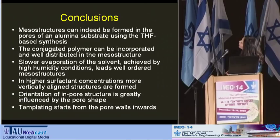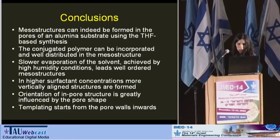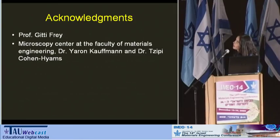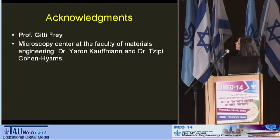To conclude: mesostructures can indeed be formed in the pores of an alumina substrate using the THF-based synthesis. The conjugated polymer can be incorporated and well-distributed inside the mesostructure. A slower evaporation of the solvent achieved by high humidity conditions leads to well-ordered mesostructures. At higher surfactant concentration, more vertically aligned structures are formed, and the orientation of the pore structure is greatly influenced by the pore shape. An additional conclusion I had no time to show today is that templating of the mesostructure starts from the pore walls and moves inwards towards the center of the pores. I would like to thank my supervisor Professor Gitti Frey, and also Dr. Jaron Kaufmann for the EFTEM, and Dr. Zipi Koenheim for the FIB sample preparation, both from the Technion Microscopy Center in the Faculty of Materials Engineering.